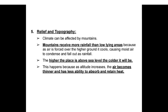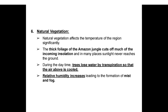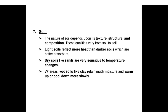Relief and topography: mountains receive more rainfall than low-lying coastal areas because air forced over higher ground cools, causing moisture to condense and fall as rainfall. The higher the place above sea level, the colder it will be, because as altitude increases the air becomes thinner with less ability to absorb and retain heat. Natural vegetation: thick foliage like the Amazon jungle cuts off much incoming insolation; sunlight may never reach the ground. Trees lose water by transpiration, cooling the air above; relative humidity increases, leading to formation of mist and fog.